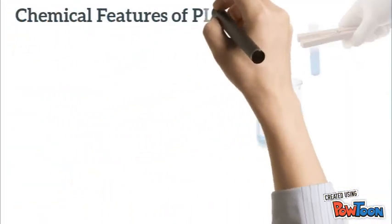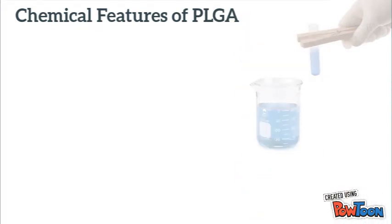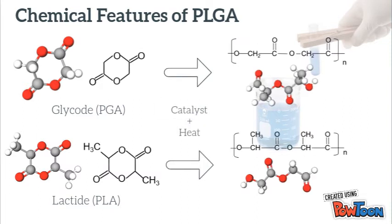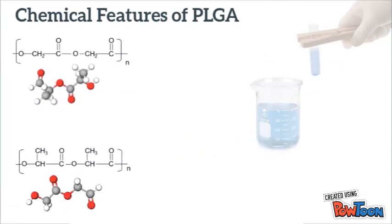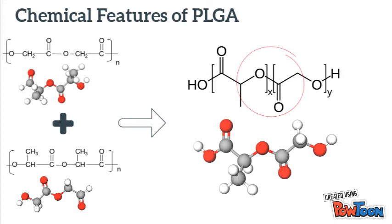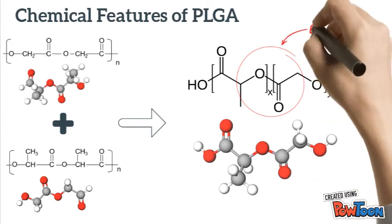PLGA is a synthetic degradable co-polymer formed by polyglycolic acid, or PGA, and polylactic acid, or PLA. PGA and PLA structures can be linearized using a catalyst and applying heat. Then, PLGA can be formed by linking these two polymers by means of an ester bond.